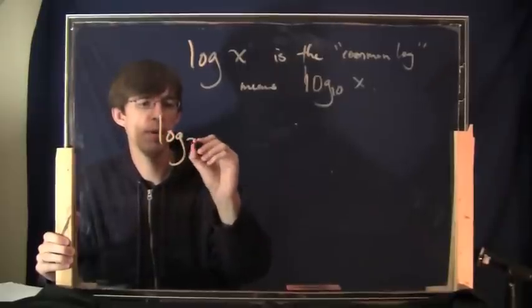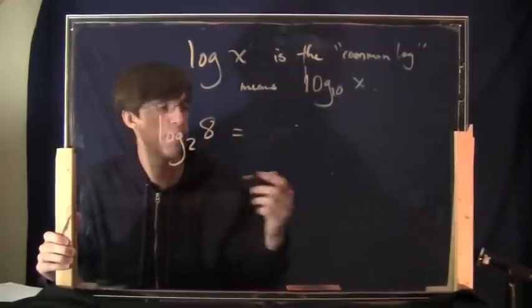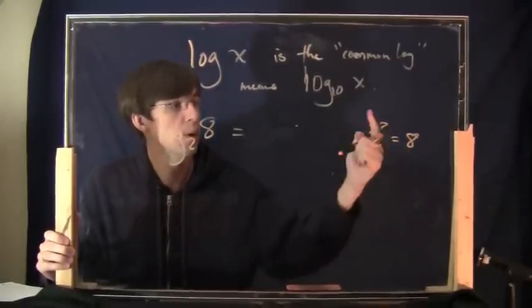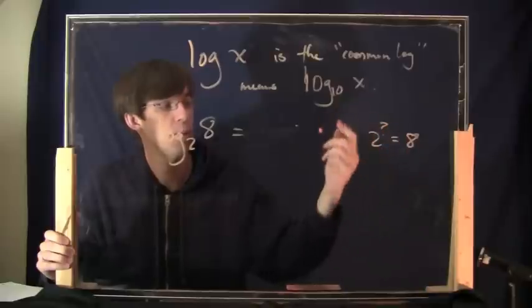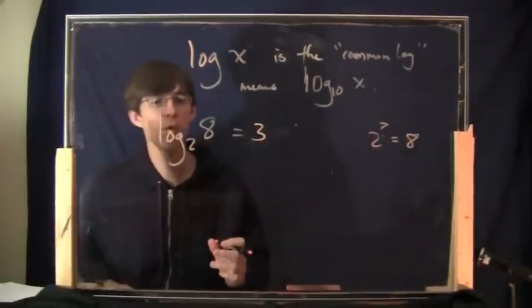How about this log base 2 of 8? What is that? Remember, what this means is it is the exponent which is required to make that true. So what power goes here in order to make 2 to some power equal 8? The answer is 3. All right. This is how you do logarithms.